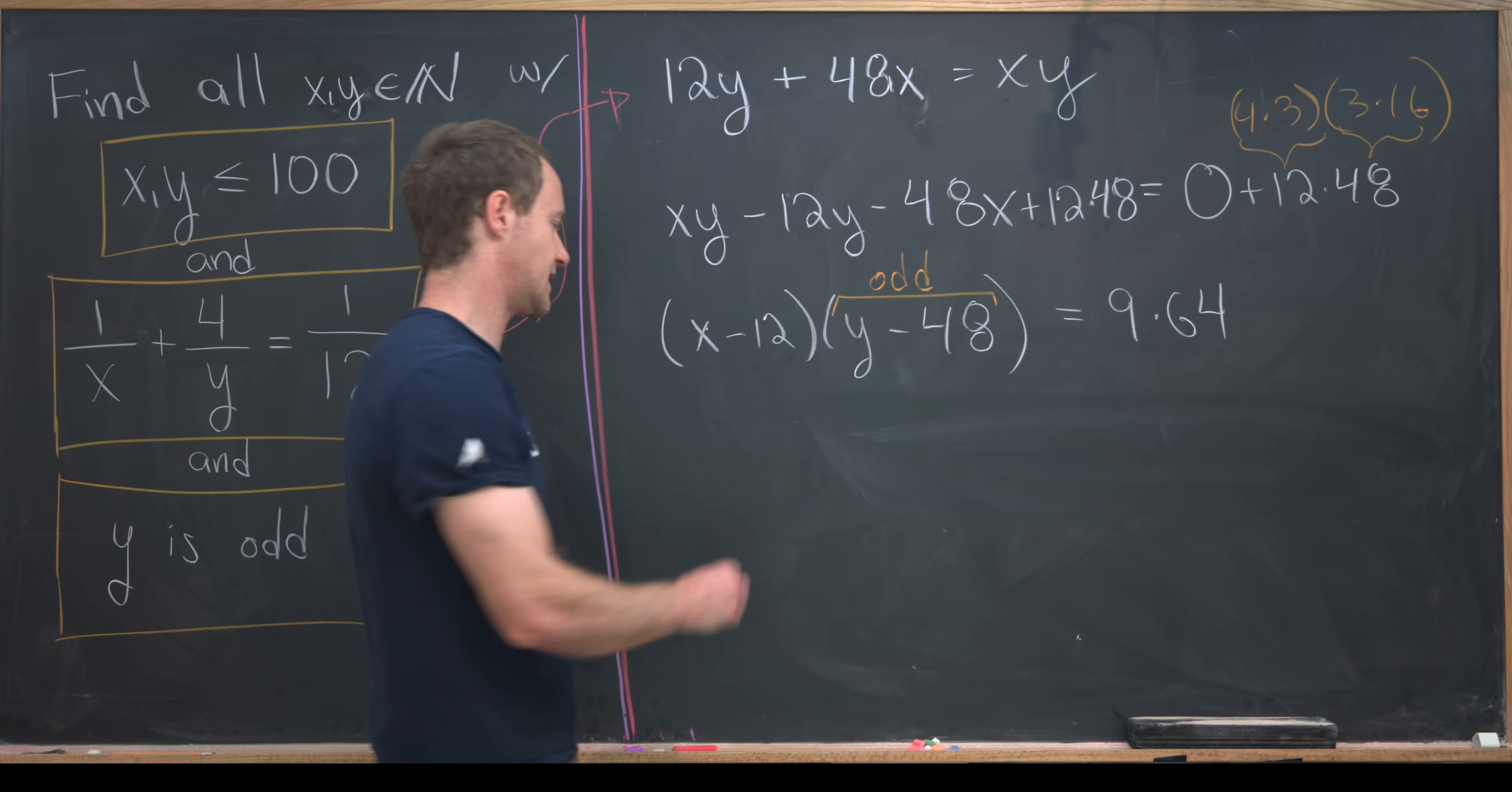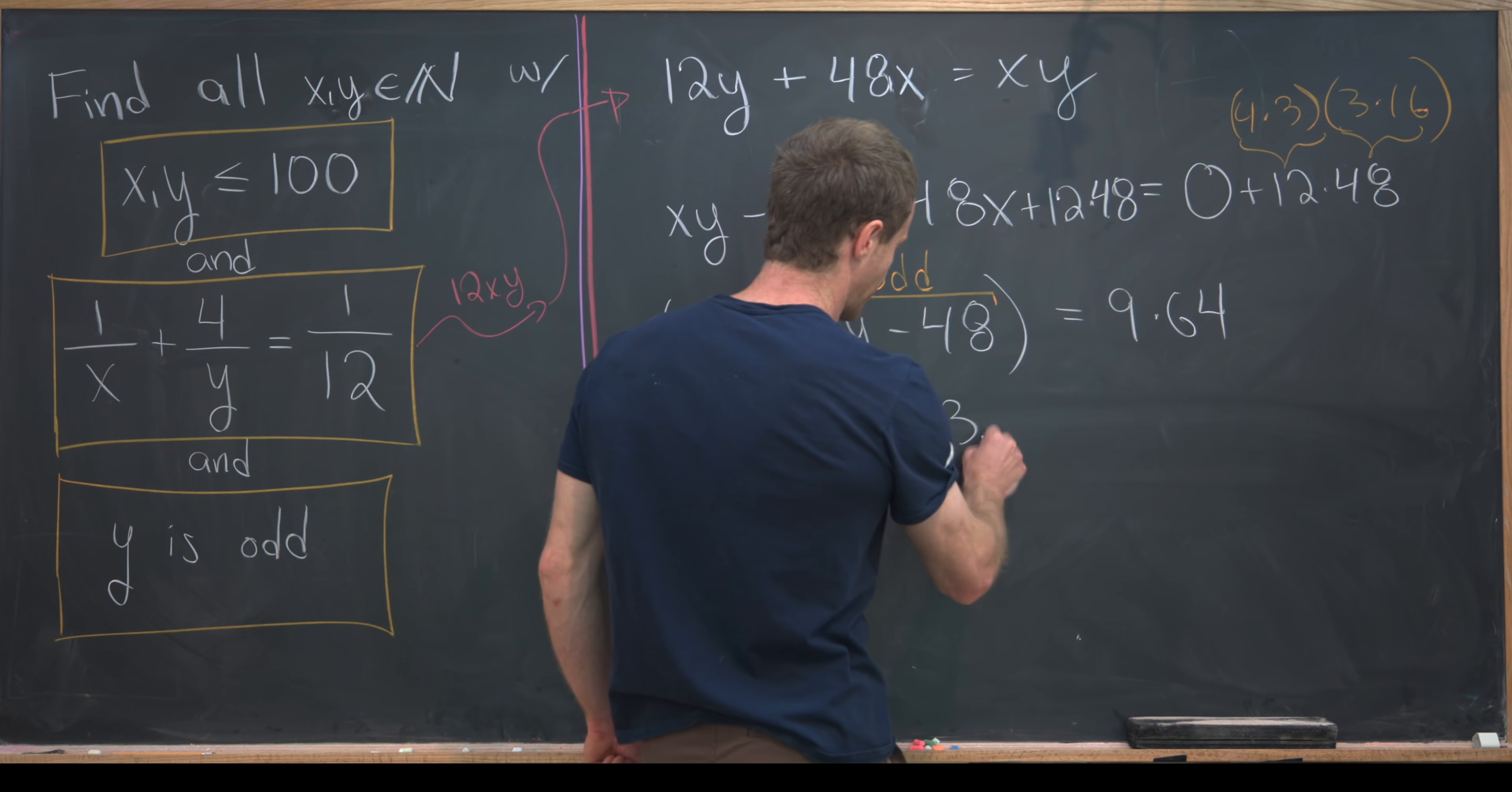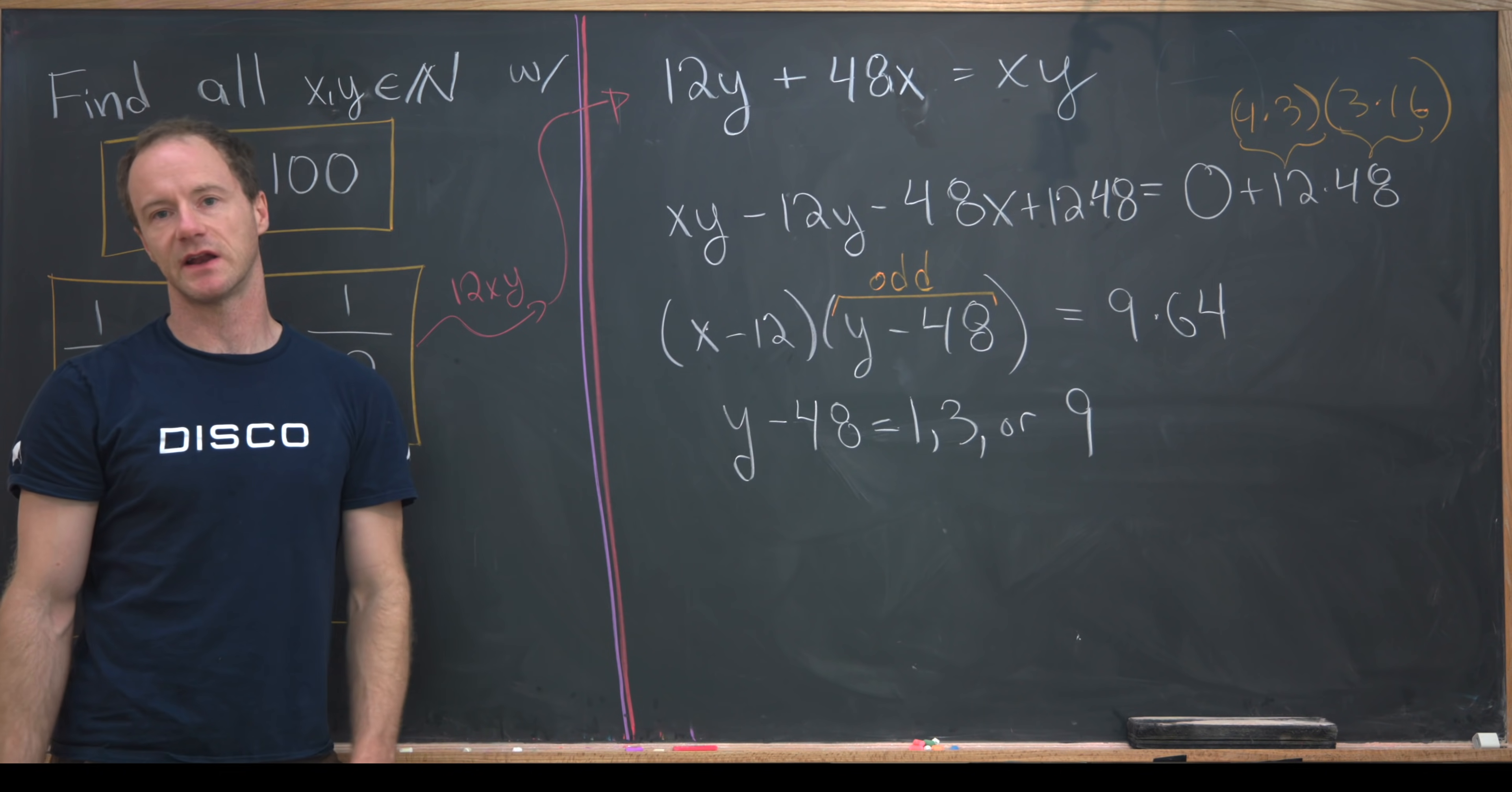In fact, this y minus 48 has to be an odd factor of this 9 times 64. But that gives us three values for y minus 48. We have y minus 48 equals 1, 3, or 9, because those are the only odd factors of that right-hand side.